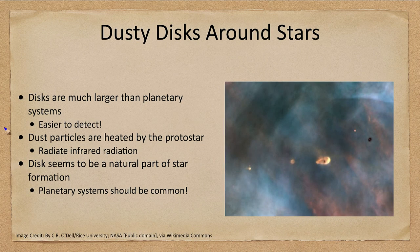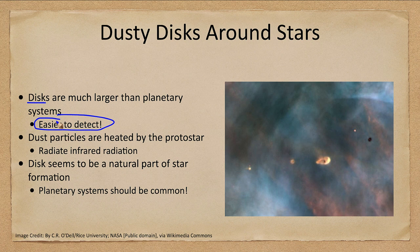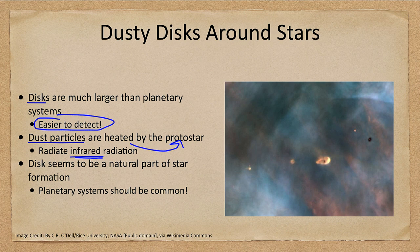So what do we know? First of all, earlier we were able to look at disks. Disks are much larger than the planetary systems and therefore are easier to detect. We could see these where material would collect around the star as the star was forming. The dust particles there would then be heated by that protostar and give off infrared radiation that could then be detected. Because of this, and we've known of this for a long time, disks seem to be a natural part of star formation. We find them around lots of forming stars, and that meant that we thought planetary systems should be very common.